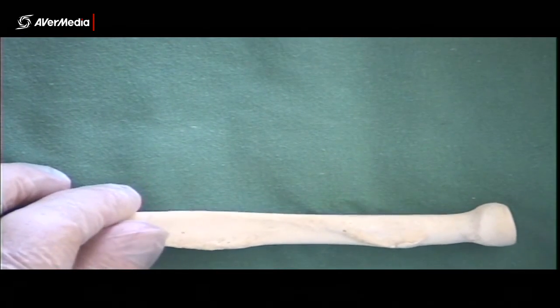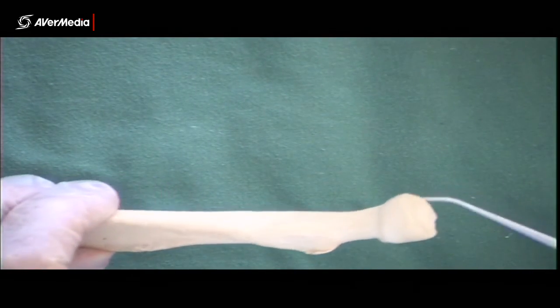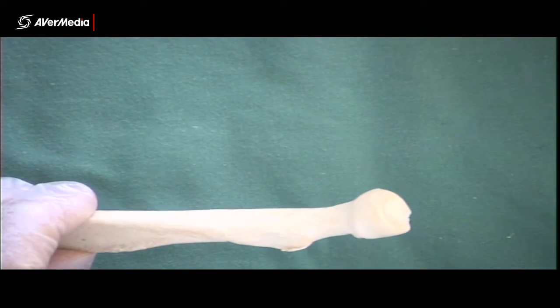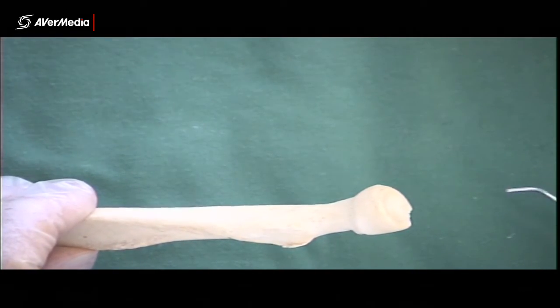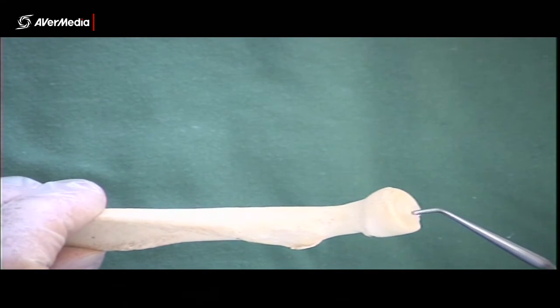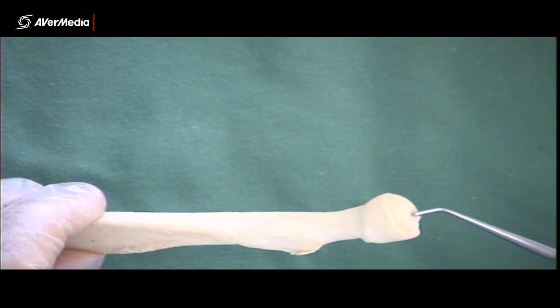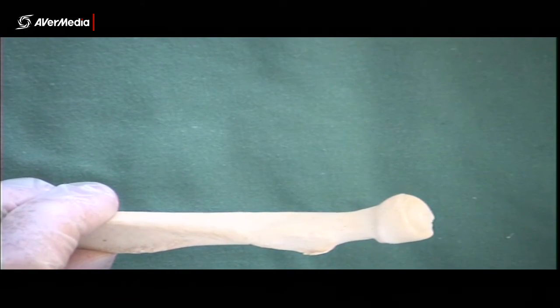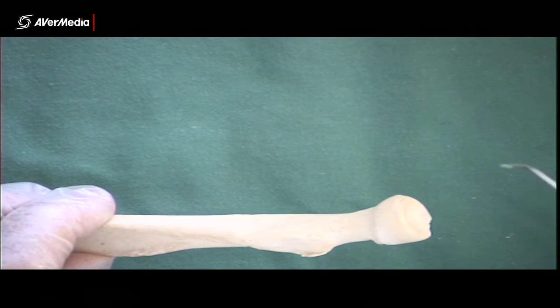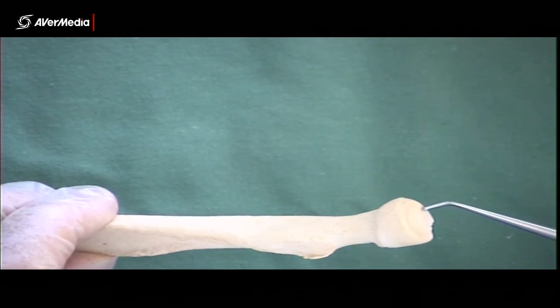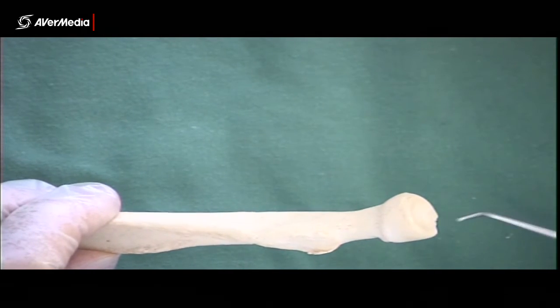A few on the radius now. Now with the radius, this whole bit here at the proximal end is, of course, the head, but we can break it up into a couple of different structures. So the head has an articular fovea at the top. And what's a fovea? Yeah, a small shallow depression. Brilliant. So that's a depression in there that's going to articulate with the capitulum.